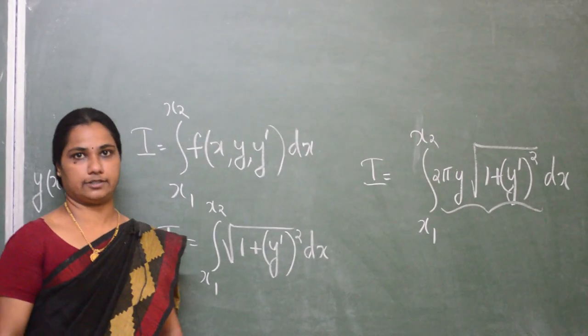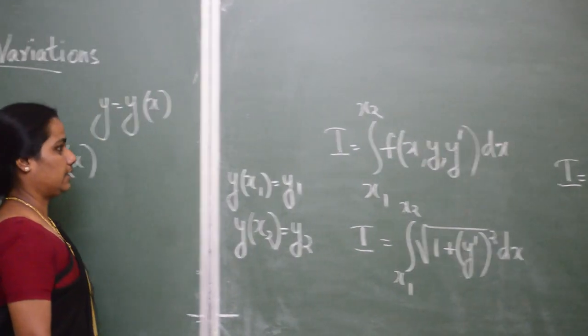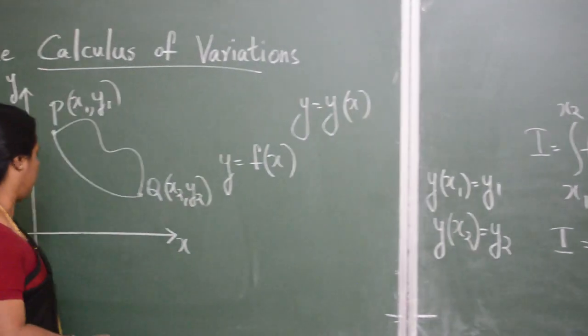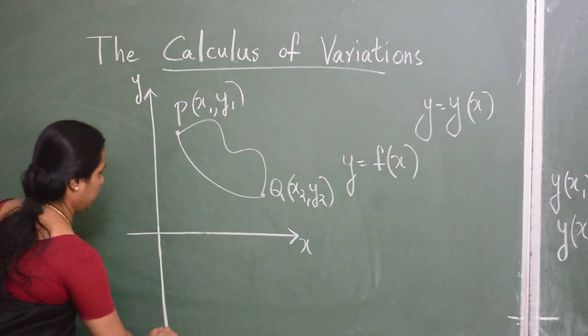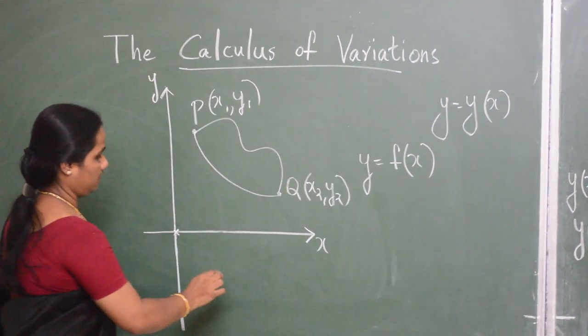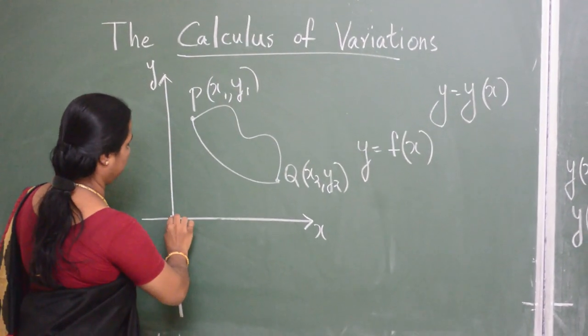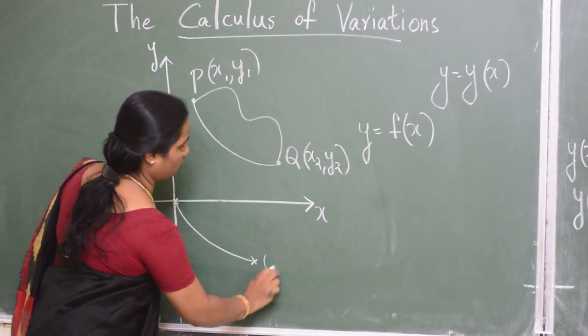Now, to formulate the brachistochrone problem, we consider the point P situated at the origin and the bead slides from rest to the point Q.